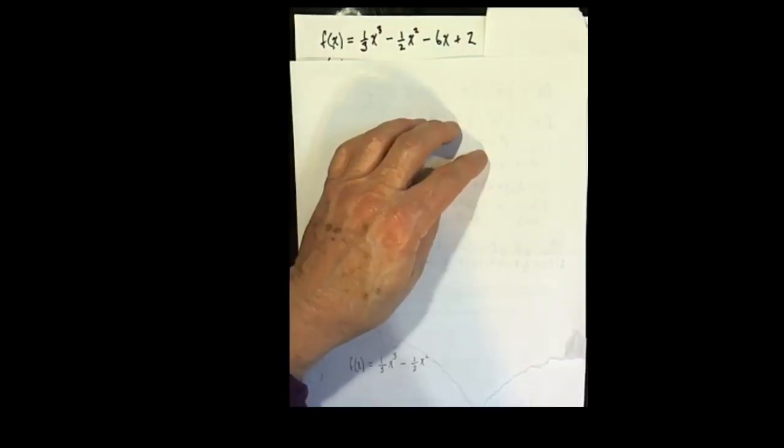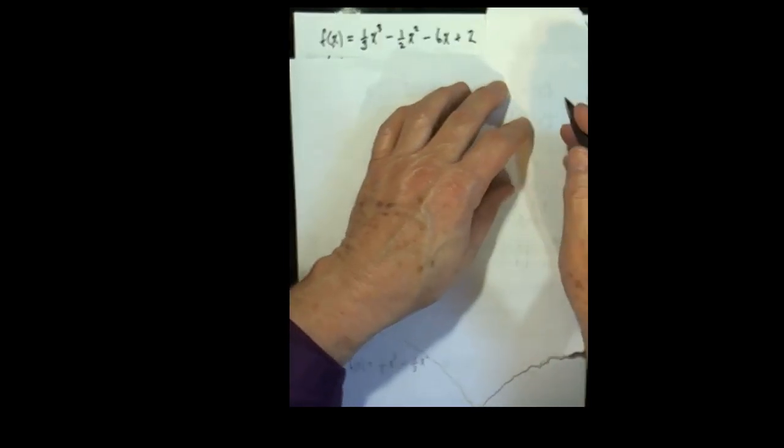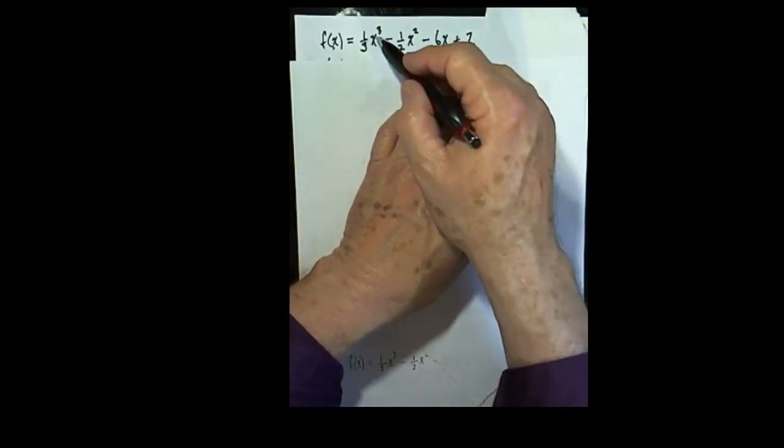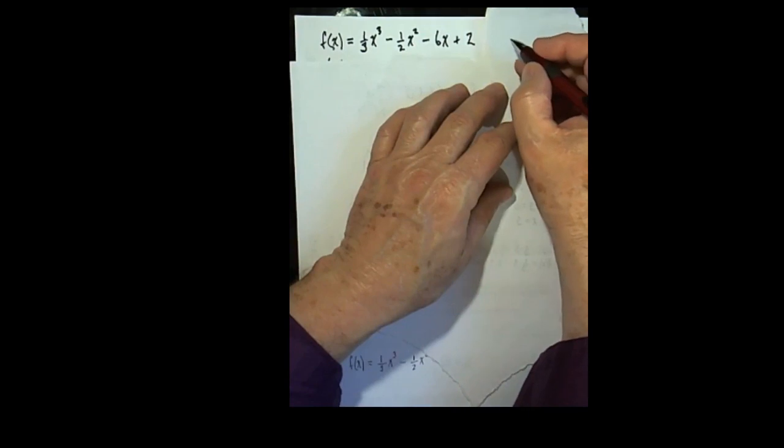So let's take an easy function to begin with. Here's a function that you might already know the graph of. Because this is a third degree polynomial, you actually already know from a previous course what its graph looks like. A third degree polynomial will have two bends.